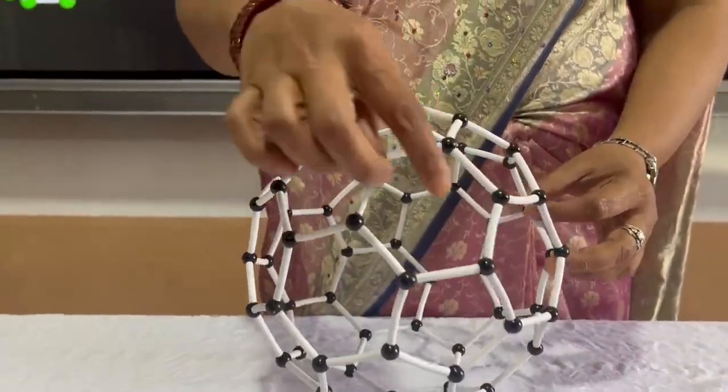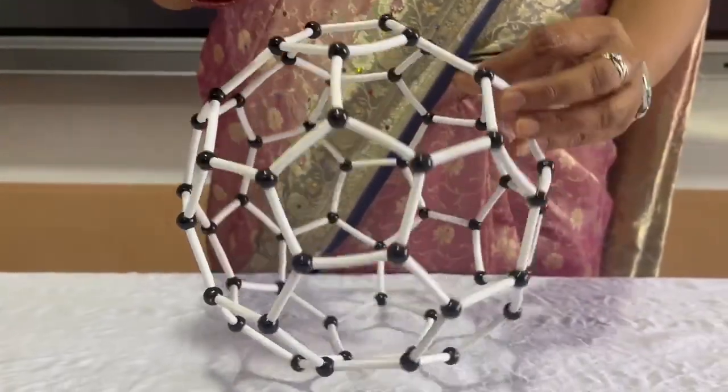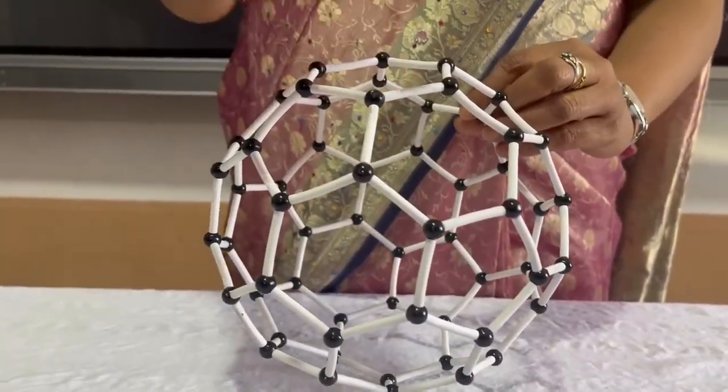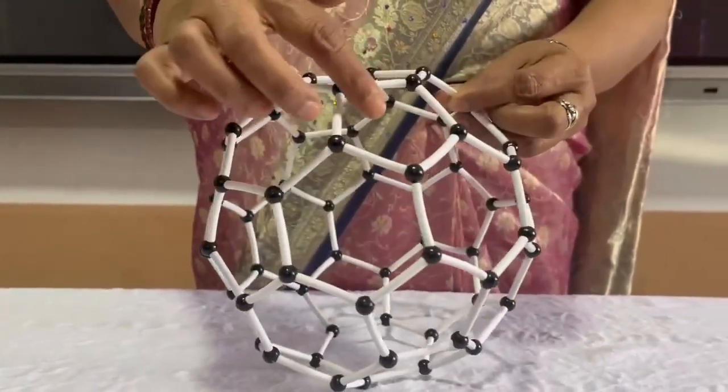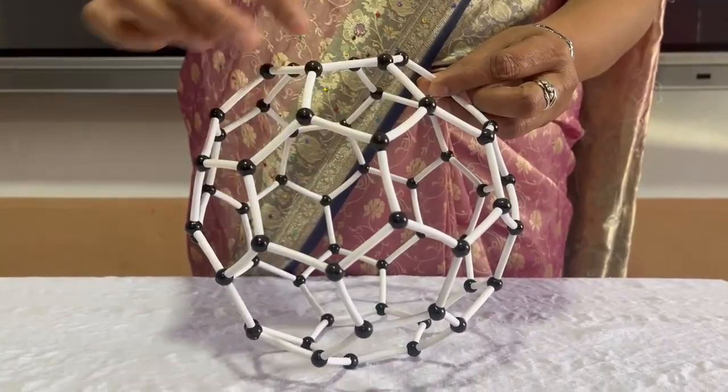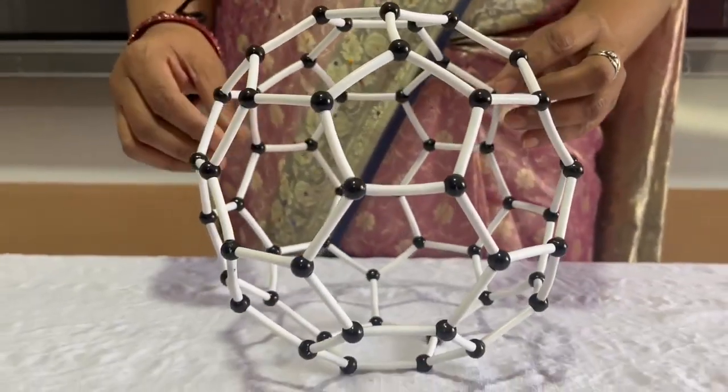It has 20 hexagon and 12 pentagon rings. The hexagon ring is fused with hexagon as well as pentagon rings, while the pentagon ring is only fused with hexagon rings. It is soluble in organic solvents.